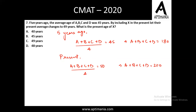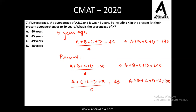Now by including X, their present average changes to 49. So (A + B + C + D + X) / 5 = 49, which means A + B + C + D + X = 245. Since A + B + C + D is 200, we get 200 + X = 245, so X equals 45 years. The present age of X is 45 years. Option B is the correct answer for this question.